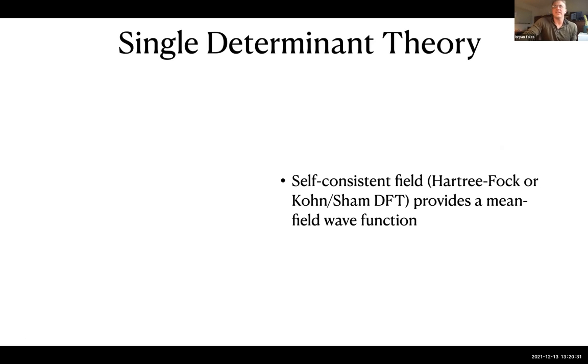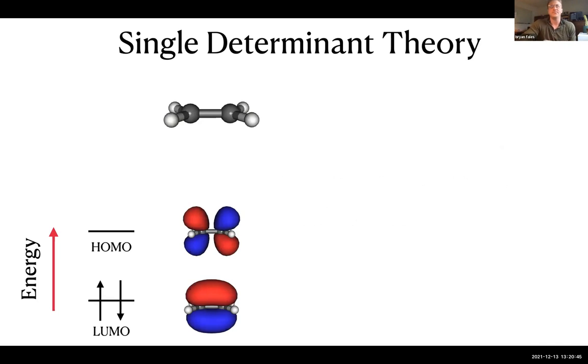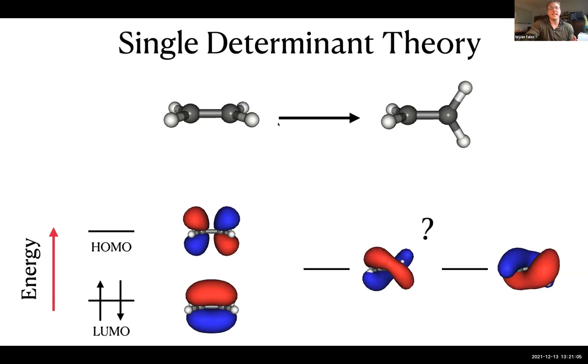We're going to talk about single determinant theory, focusing on the Hartree-Fock or the Kohn-Sham DFT approach. This provides us with the mean field description of the wave function. Looking at ethylene, we're well-resolved at equilibrium geometry with doubly occupied electrons in the LUMO and the HOMO empty. However, if you twist this bond, these two orbitals can become degenerate, and it's not clear into which orbital you should put the electrons.